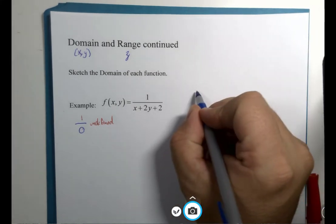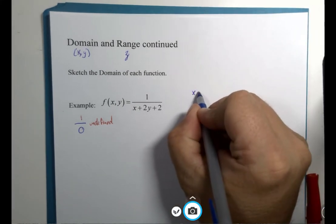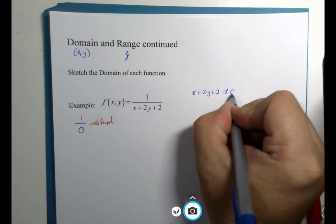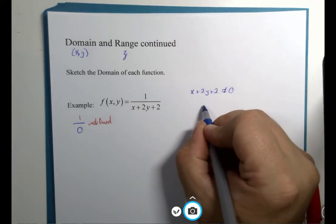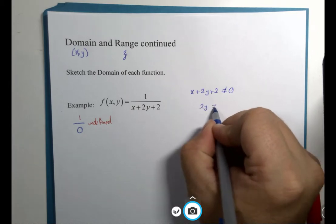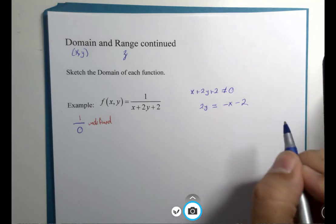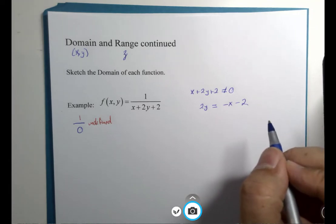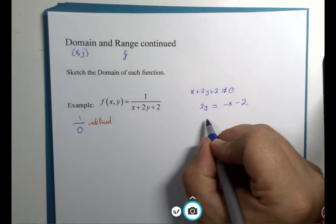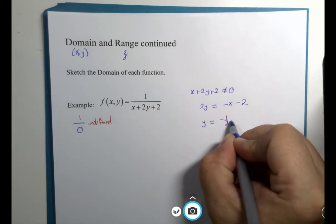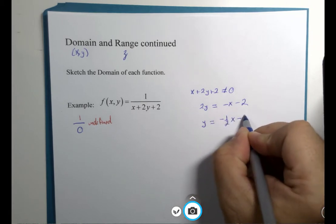We just need to make certain that this quantity, x plus 2y plus 2, is not equal to zero. Let's subtract x from both sides and subtract 2 from both sides. Yes, I missed something on purpose, and let's divide both sides by 2.